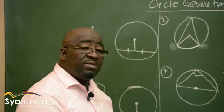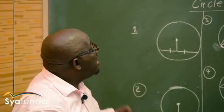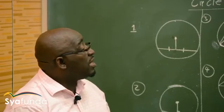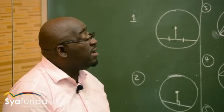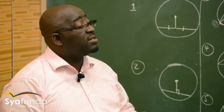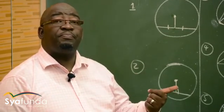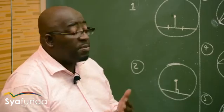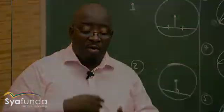These are the ten theorems that generally deal with circle geometry. Now I want us to look at the other three theorems that deal with angles and triangles — the parallel lines, similar triangles, or proportionality theorems. I want us to move to those theorems now.